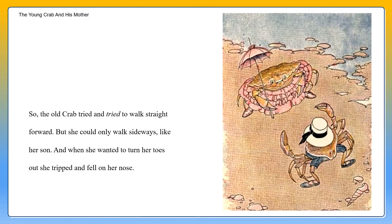So the old crab tried and tried to walk straight forward, but she could only walk sideways like her son. And when she wanted to turn her toes out, she tripped and fell on her nose.